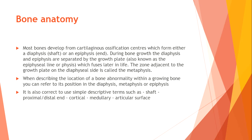When describing the location of a bone abnormality within a growing bone, you can refer to its position in the diaphysis, metaphysis, or epiphysis. It is also correct to use simple descriptive terms such as shaft, proximal, distal, and cortical medullary articular surface.